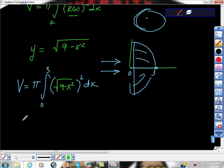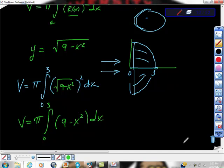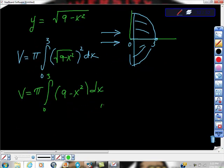We'll get 9 minus x squared. Do a little bit of algebra to simplify this, and we'll get volume is equal to pi times the definite integral 0 to 3 of 9 minus x squared dx. And now I think we have an integrable form.